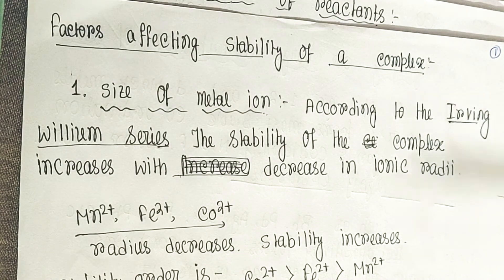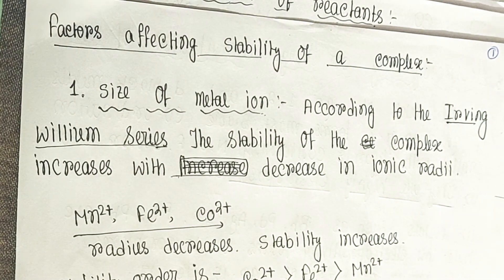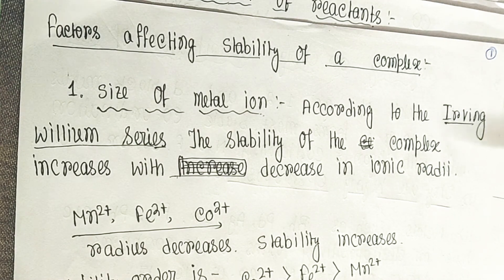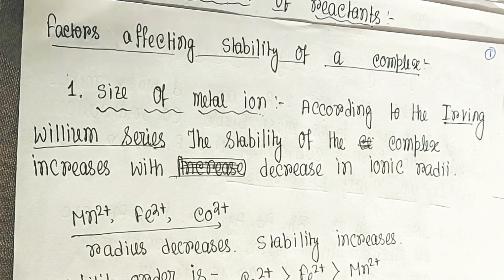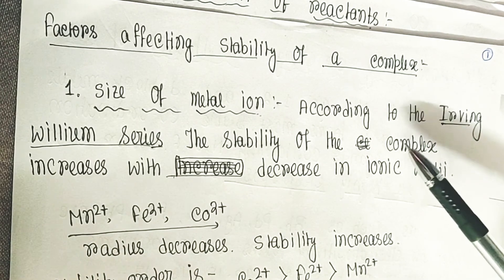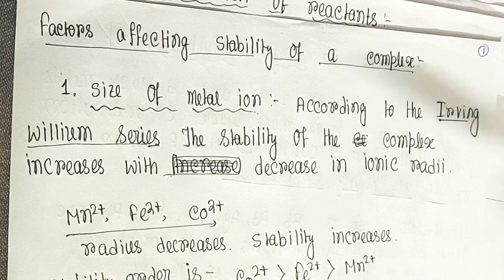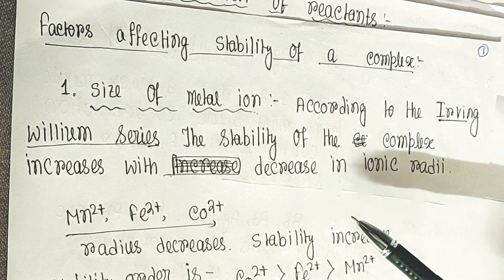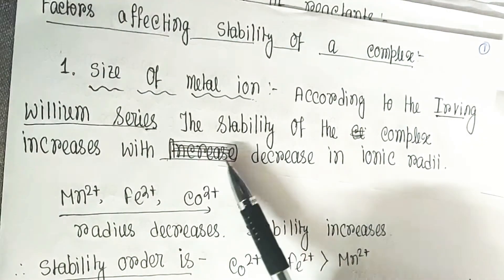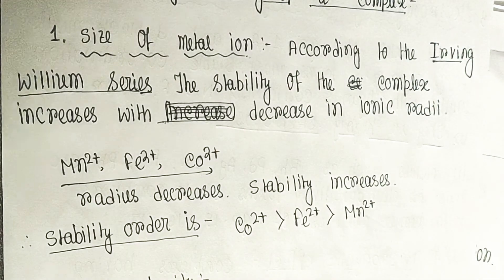From the point of view of the metal, every metal trying to make a stable complex should have a greater charge density. If a high charge density is present in the metal, that metal can make stable complexes with the ligands. For greater charge density, we need a small radius and a high amount of charge. According to the Irving Williams series, the stability of the complex increases with decreasing ionic radii.